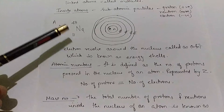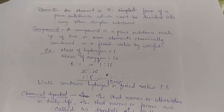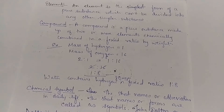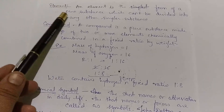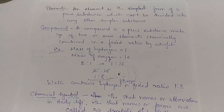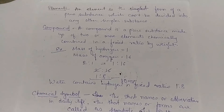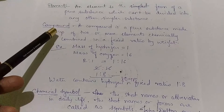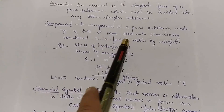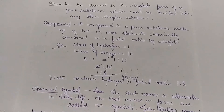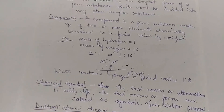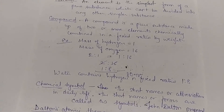An element is the simplest form of a pure substance which cannot be divided into any simpler substance. In an element, all the atoms present are identical and possess the same properties. A compound is also a pure substance made up of two or more elements which are combined chemically in a fixed ratio by weight.